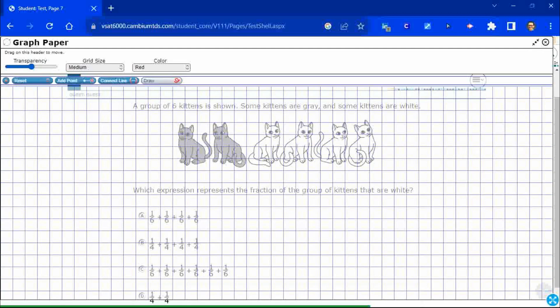And we're going to start with this draw feature right here. So we've got six kittens. Some are gray, some are white. Well, that's pretty easy, right? We've got two gray, four white. That's pretty simple. But we need to find an expression.